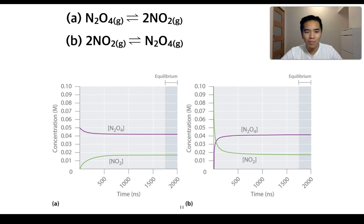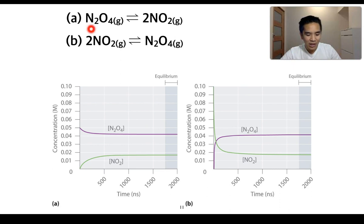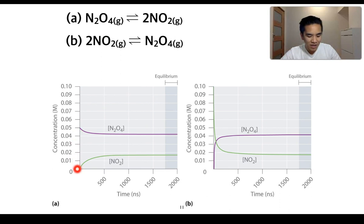Looking at the equilibrium between nitrogen dioxide (NO2) and dinitrogen tetroxide (N2O4): the changes in concentration of N2O4 and NO2 link directly to the mole ratio. For every one mole of N2O4 converted, two moles of NO2 are produced — so NO2 increases by twice the amount that N2O4 decreases. Conversely, NO2 decreases by twice the amount that N2O4 increases when the reaction goes in the reverse direction, forming N2O4.